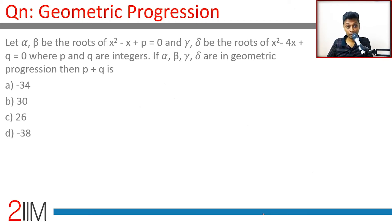Let alpha and beta be the roots of x squared minus x plus p equals 0. So alpha plus beta is 1, alpha beta is p.